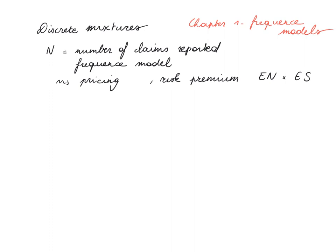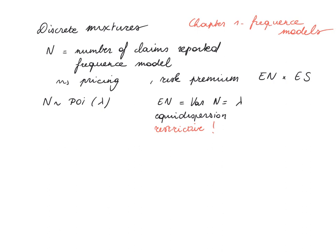It's important in non-life insurance to construct suitable distributional models for the frequency of the insured event. A very standard model is the Poisson distribution with parameter λ, where the expected value of N equals the variance of N equals λ. We call that equidispersion — meaning the mean equals the variance — and this can be quite restrictive for certain data sets, which is why we want more flexible distributions.